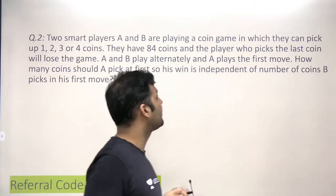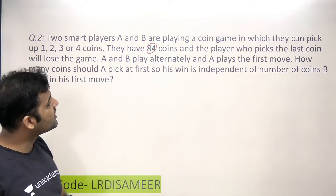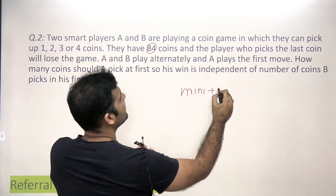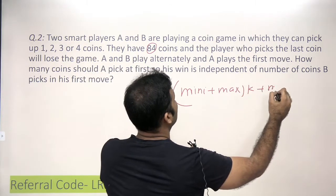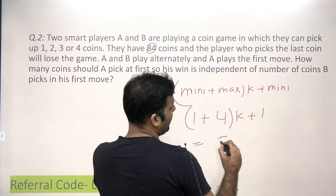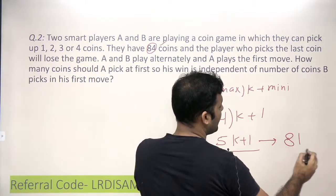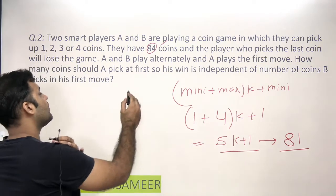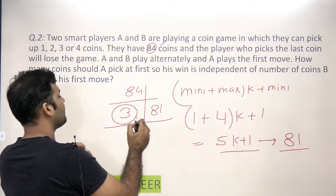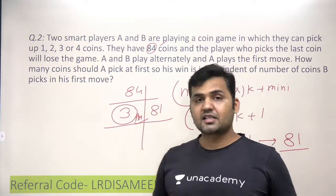Let's try a variation: total coins changed from 83 to 84, all other rules the same. The controlling factor remains 5k + 1. The largest such number less than 84 is still 81. So A needs to leave 81 coins for B, meaning A picks 84 − 81 = 3 coins in the first move. The answer here is 3.